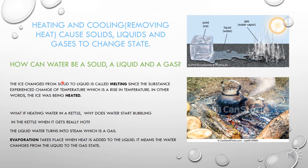How can water be a solid, a liquid, and a gas? The ice changing from solid to liquid is called melting. As you can see, this is a solid ice turning into a liquid because of the sun's heat. It's melting — the substance experienced a rise in temperature. In other words, the ice was being heated.